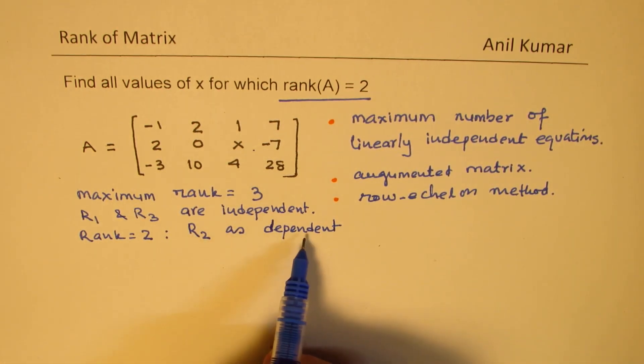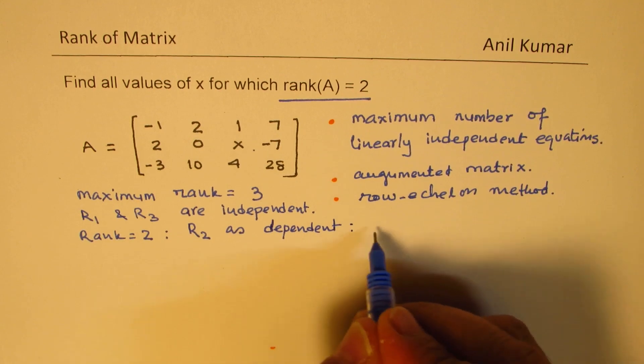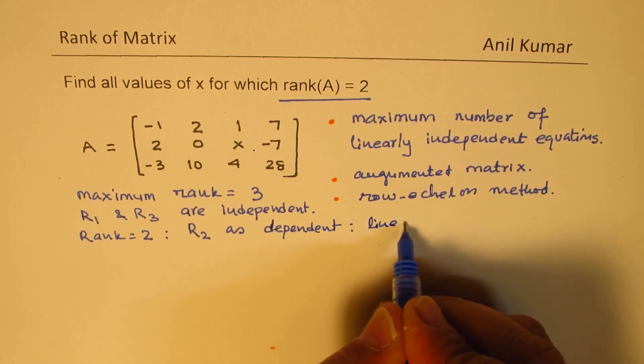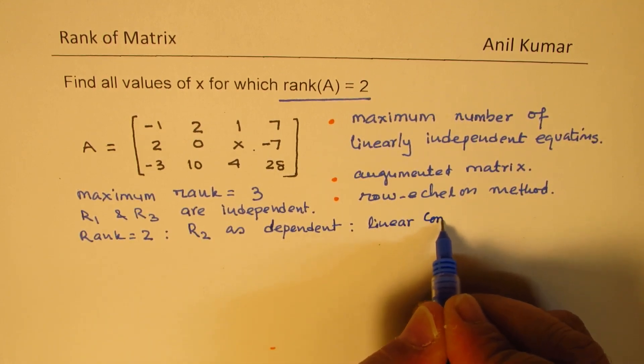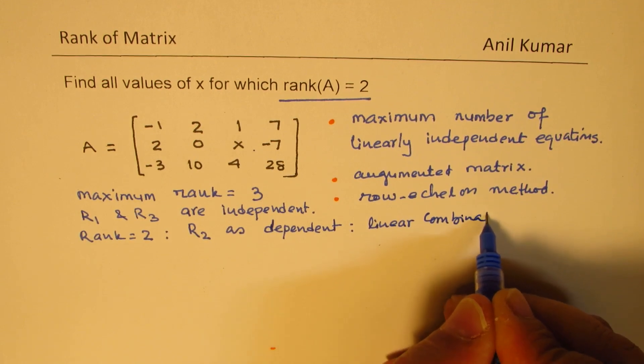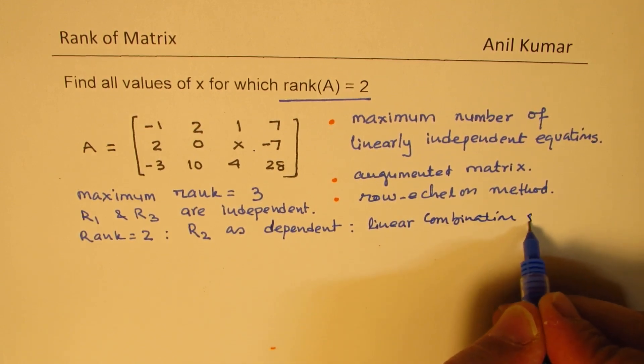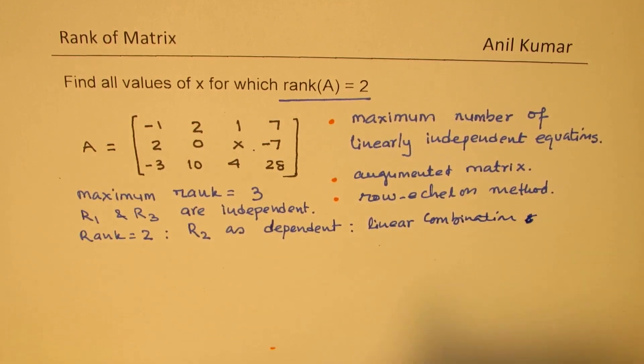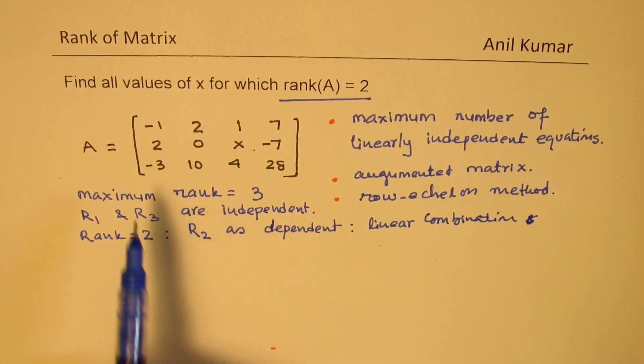Row 2 is dependent if it could be formed by linear combination of others. We are looking for linear combination. That's the whole strategy behind it.